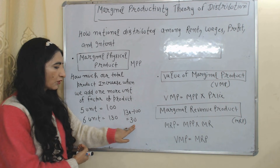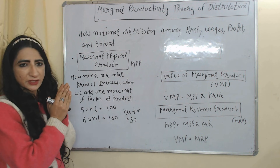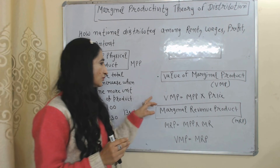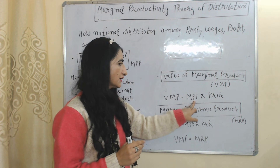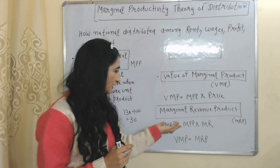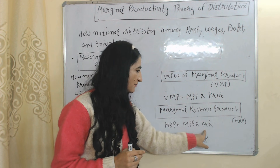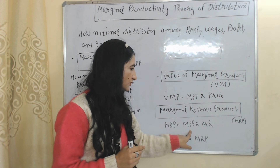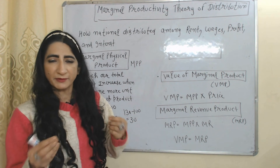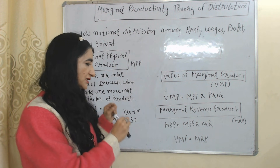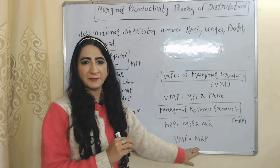The difference between 130 and 100 is 30, and that 30 is called the Marginal Physical Product. We can calculate VMP by multiplying price with the Marginal Physical Product, and we can calculate MRP by multiplying marginal revenue with the Marginal Physical Product. This theory works under perfect competition, so we assume VMP is equal to MRP.